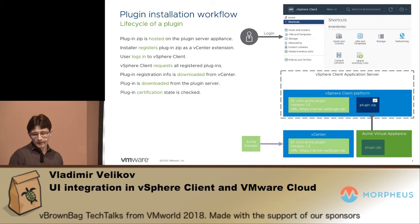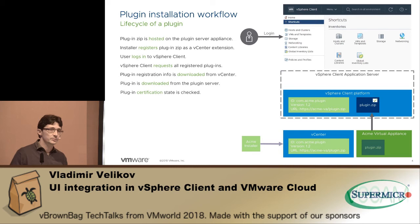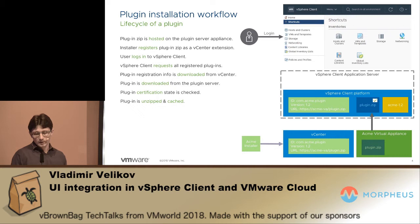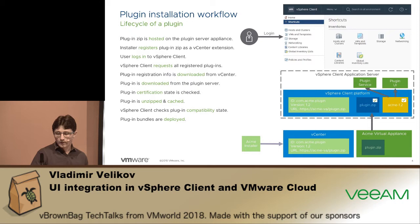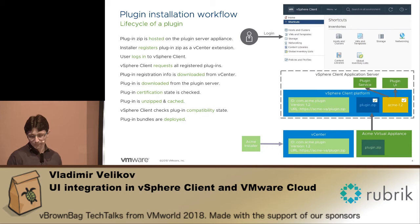What happens next is a certification check. There is a certification program run by VMware where partners can certify their plugins — this is visible on the UI but is not a reason for failing the plugin in the client. It will be operational and working, but will show as not certified by VMware. Then we unzip and do a check for compatibility. Once we know the plugin is compatible, its bundles are deployed into the application server — first the service and all Java bundles, then the UI.